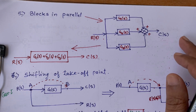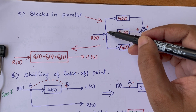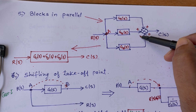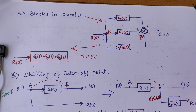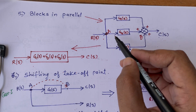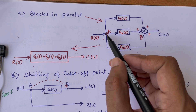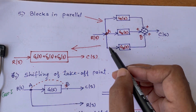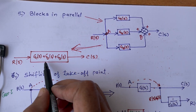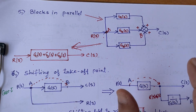The fifth rule is the parallel rule. Blocks are said to be in parallel when they start from the same takeoff point A and end at the same summing point B. In this case G1(s), G2(s), and G3(s) all go from A to B, and we add them together. So: parallel means addition, cascade means multiplication.